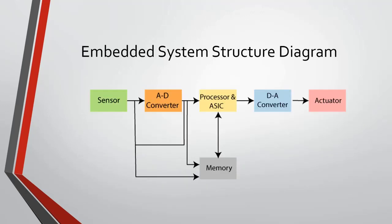In terms of hardware, a basic embedded system consists of a sensor, an analog-to-digital (A-to-D) converter, a processor, a digital-to-analog (D-to-A) converter, an actuator, and memory. Sensors convert physical sense data into electronic signals. For example, a smoke sensor senses smoke and converts it into an electronic signal based on the amount of smoke in the room. This analog data is then converted into digital data using an analog-to-digital converter.